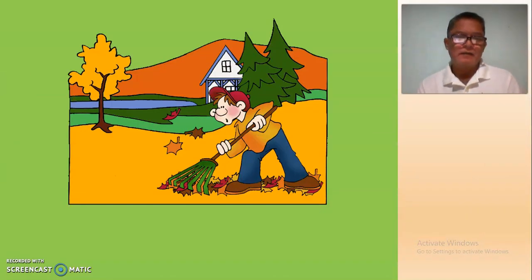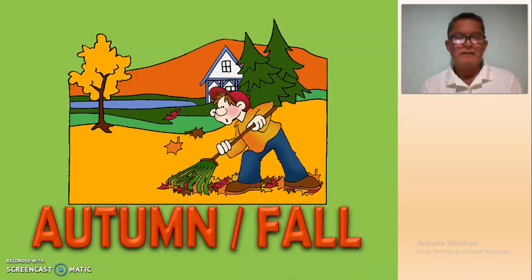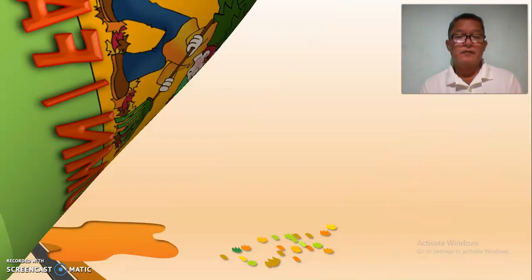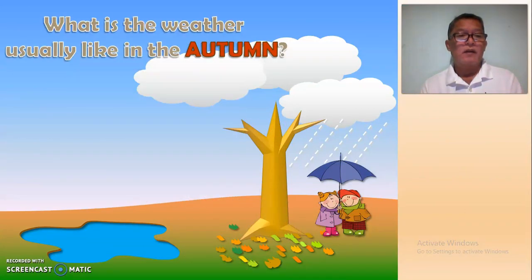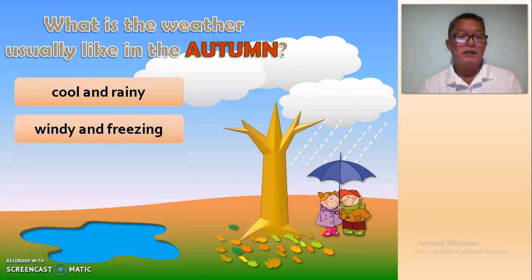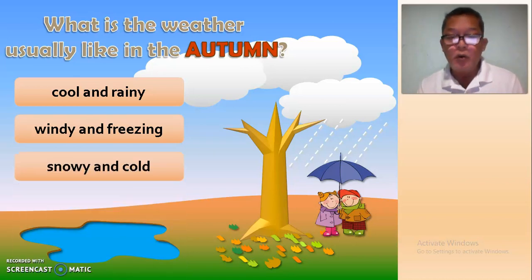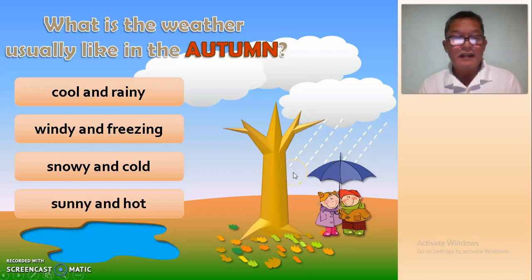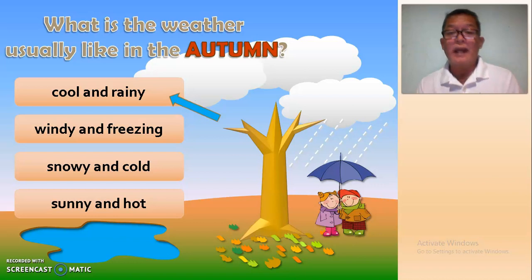What season is that? Look at the picture. What season is it? It's autumn, or fall. What is the weather usually like in autumn? Cool and rainy, windy and freezing, snowy and cold, or sunny and hot? Look at the picture. The answer is cool and rainy.